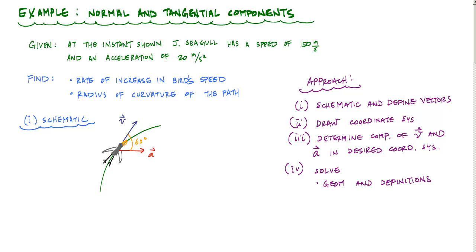So in this problem, I've already got my schematic kind of drawn out for us already. And my velocity vector would be this 150 meters per second at an angle of 60 degrees from the horizontal. My acceleration vector has a magnitude of 20 meters per second squared in the horizontal direction towards the right. And now what I want to do is draw that coordinate system. The question is, why do I have to use an n-t coordinate system here to solve this problem?